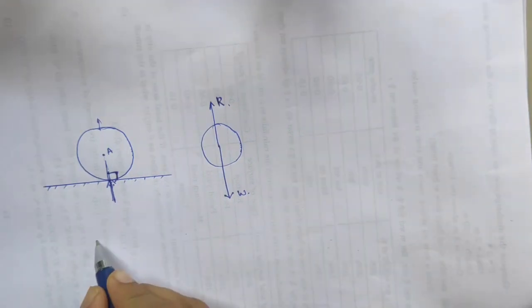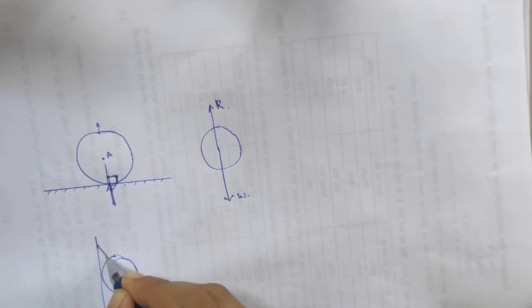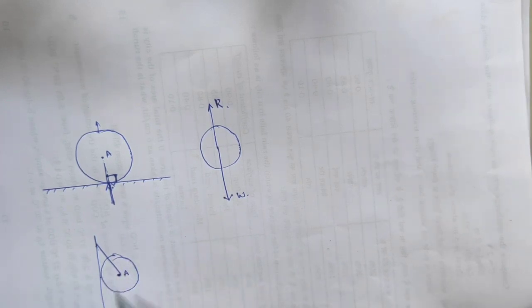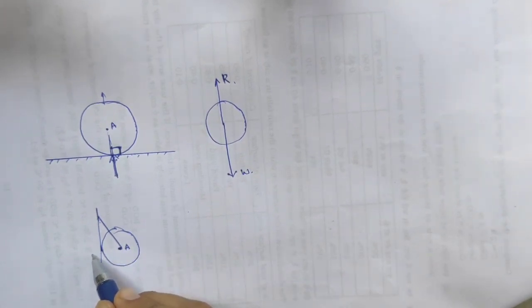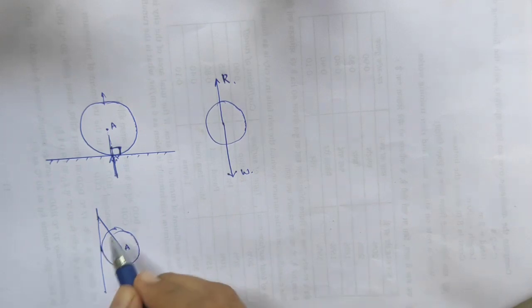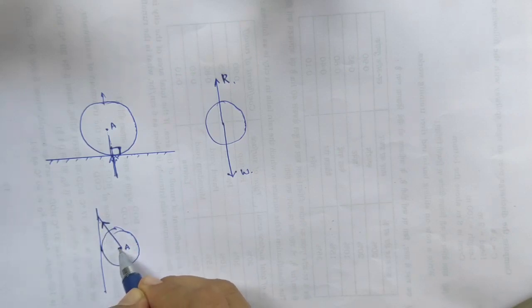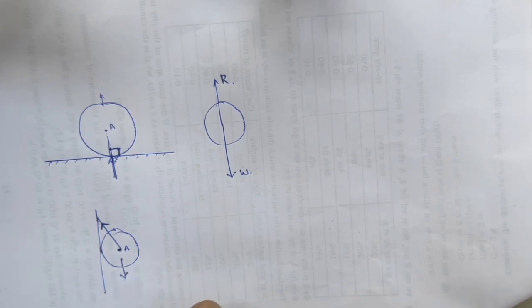Let us consider one more example. Here the body is hanged with a string or rope, and we can take the body as A, which is also supported by a wall — this is called the vertical wall. The support will be from the wall; otherwise the body will not be stable. One more support is from the string, which is called tension, because the body is hanged by this string. And one more weight will be acting; the weight of the body acts downwards, which is normal.